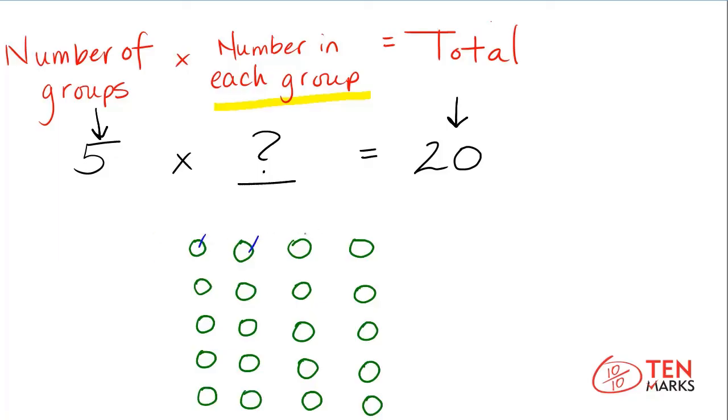One, two, three, four. Four counters in each group, which means the missing number in the multiplication sentence is four. Five times four equals twenty in all.